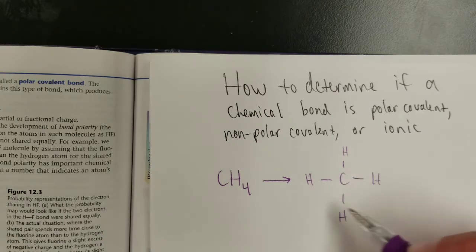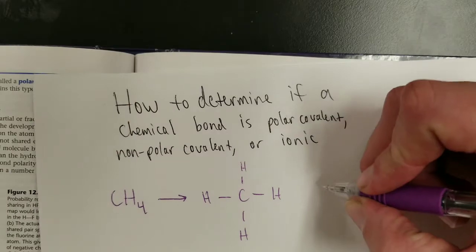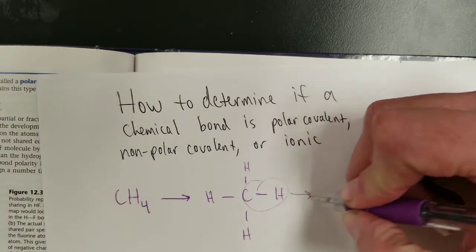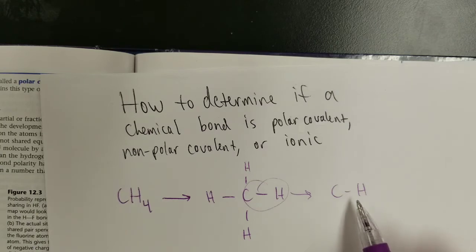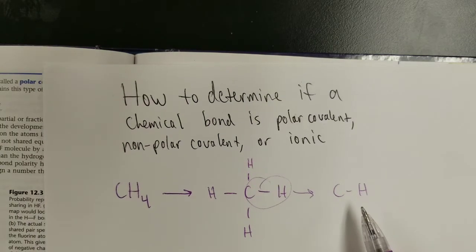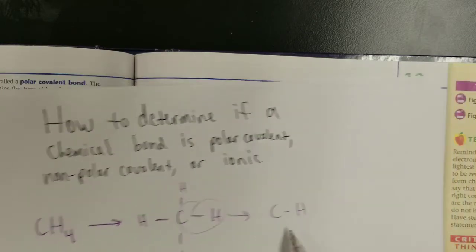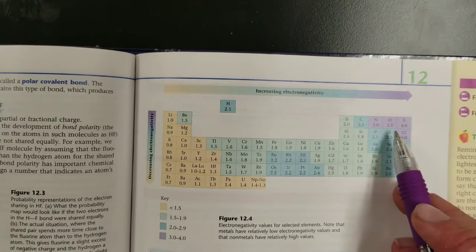It's four of the same bond. So the real question here, if I'm asking about the bond, is the carbon-hydrogen bond polar covalent, non-polar covalent, or ionic? In order to answer this question, you need to consult a periodic table with values for electronegativity.